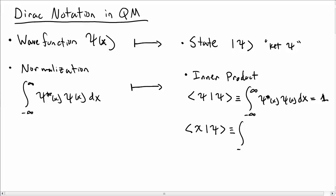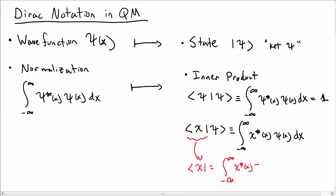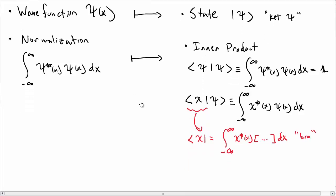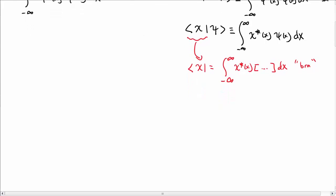More generally we'll define the inner product between two wave functions chi and psi in a similar way. We'll do the integral of chi star psi dx, and that's not necessarily equal to one. We call this chi the bra, so you can think of it as the integral of chi star with some quantity we're going to take another product with — the bra to the ket.